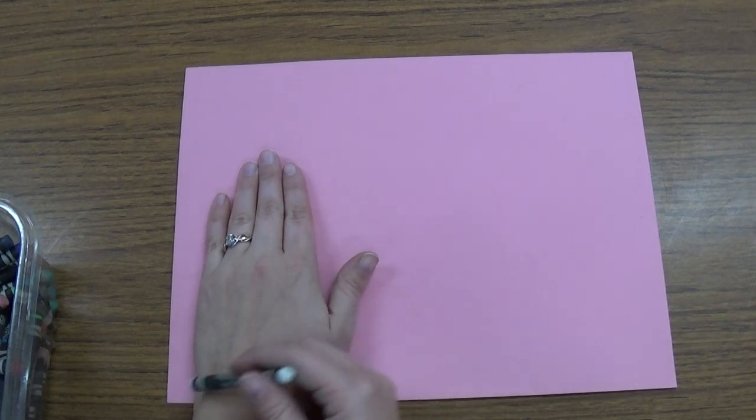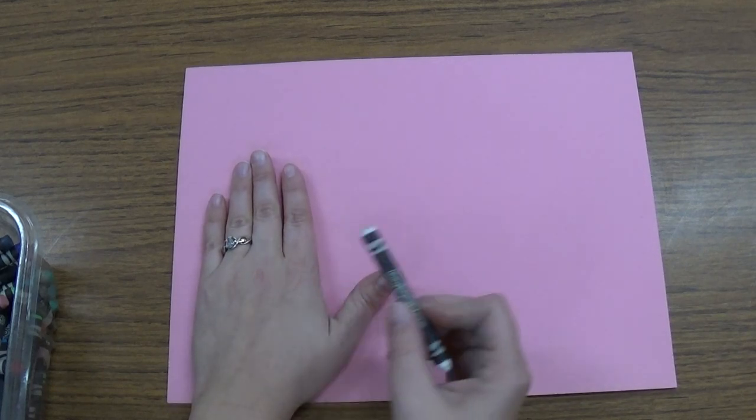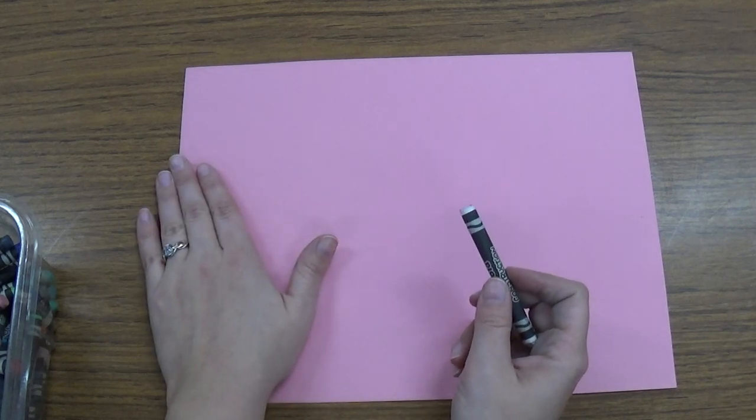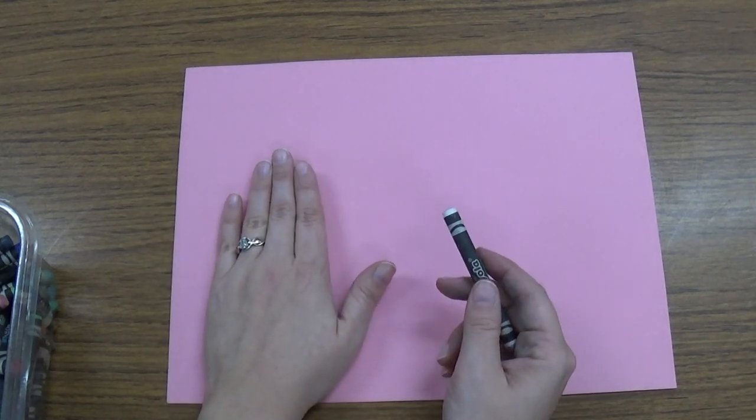So like right where your wrist is, that's where the edge of the paper is. And my whole hand is on the paper, I'm not going to have it off the side or anything like that. So we want to make sure it fits right on there.